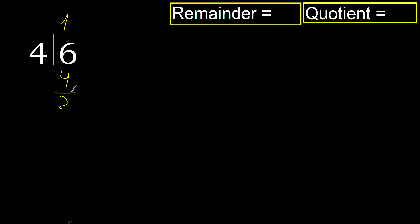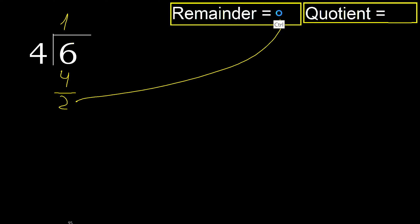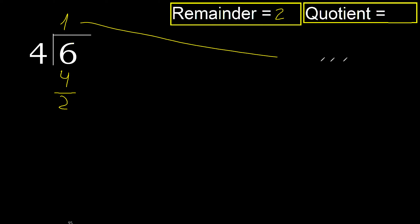Subtract 2 next. Therefore finish it: the remainder is 2, and the quotient is 1.